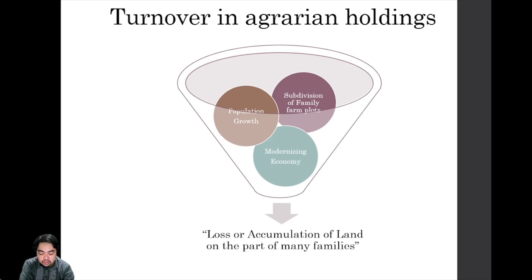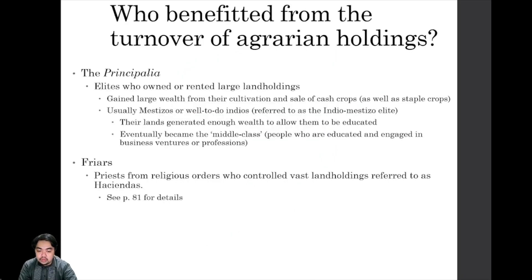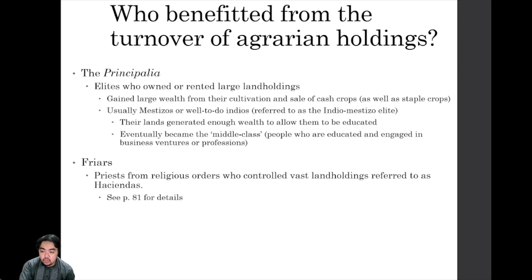When the galleon trade was no longer valuable, the agrarian economy of the Philippines changed as well because of efforts to gradually commercialize land and make its use more profitable than subsistence. With the gradual transition from subsistence to a commercial economy, we have to ask who benefited from this transition, and more importantly, why. There are two categories of beneficiaries of the gradual turnover of agrarian holdings.